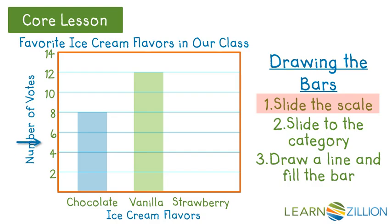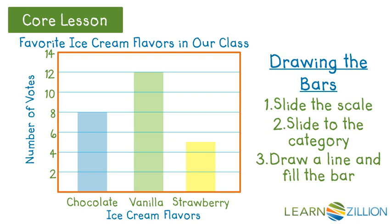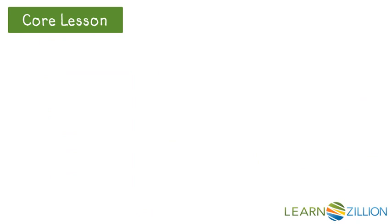Five students voted for strawberry. Since our scale is in increments of two, five falls between four and six. We slide to between four and six, then slide to the strawberry category, draw a line, and fill in the bar. We draw the line to make sure we don't go above it and that our bar is neat.